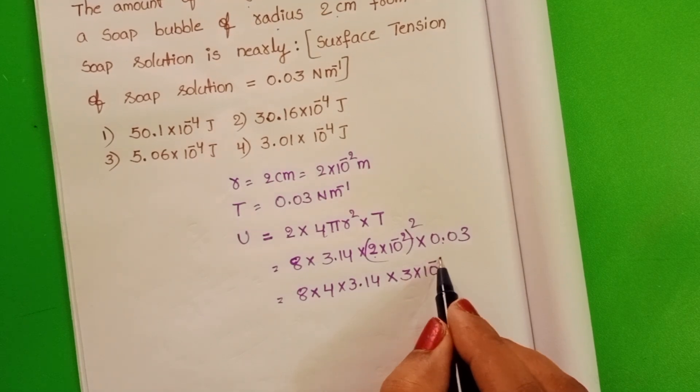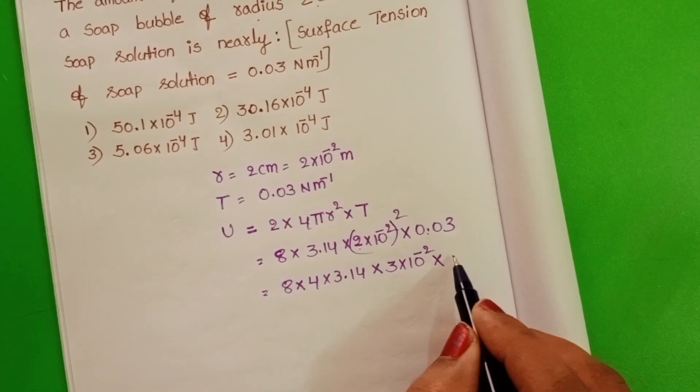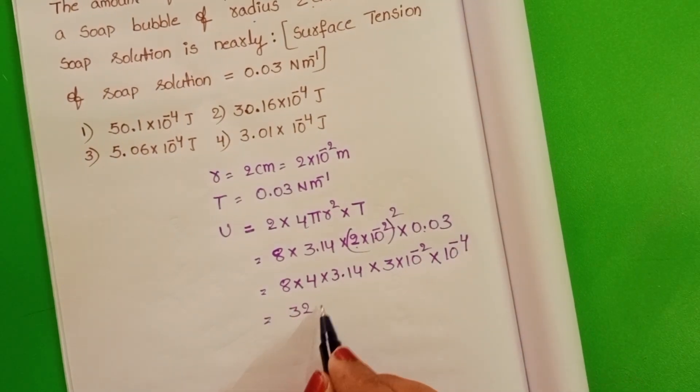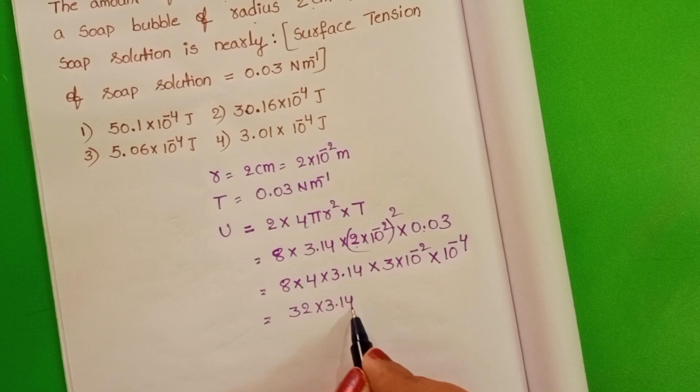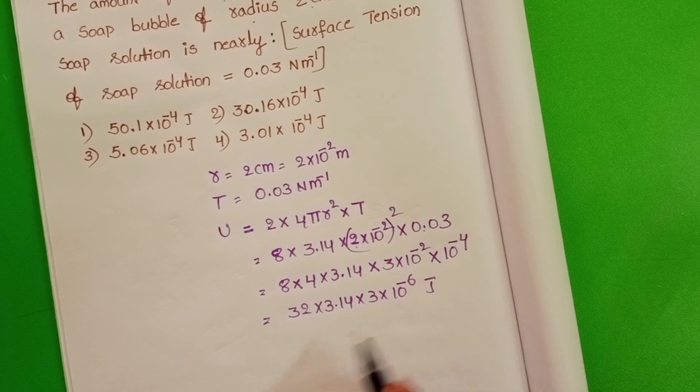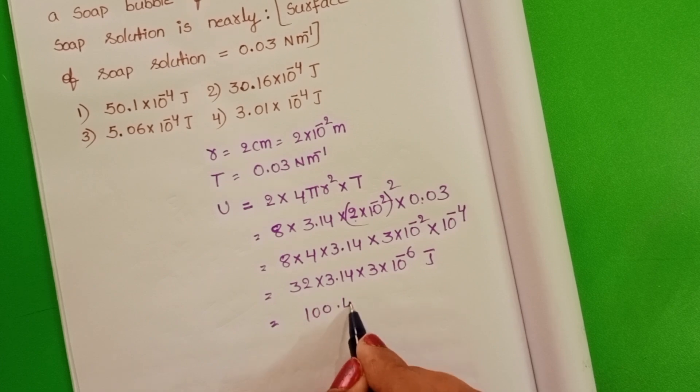3 into 10 power minus 2 into 10 power minus 2 whole square is 10 power minus 4. 32 into 3.14 into 3 into 10 power minus 6 joules. 32 into 3.14 is equals to 100.48.